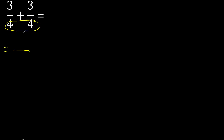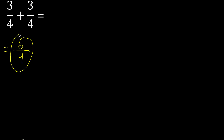Equal number, therefore the same number here. Fold — 3 plus 3 is 6. This can be simplified because it can be divided by the same number: 6 divided by 2 is 3, 4 divided by 2 is 2.